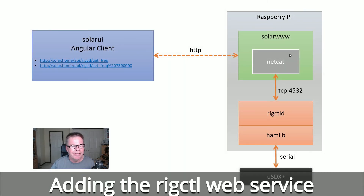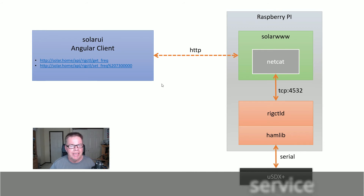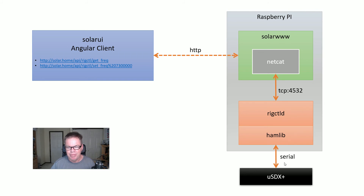Here's the updated architecture for controlling the transceiver from the Angular UI. The HTTP client makes calls across the network to solar-www, the Flask Python program with all the web services. The new piece is a netcat function to receive HTTP requests and then do straight TCP to port 4532, which is what rigctld responds to. Rigctld talks to hamlib, and hamlib uses serial to talk to the micro SDX transceiver.